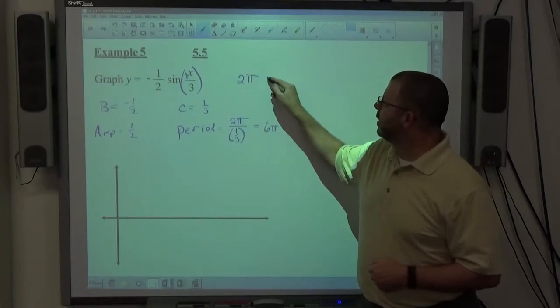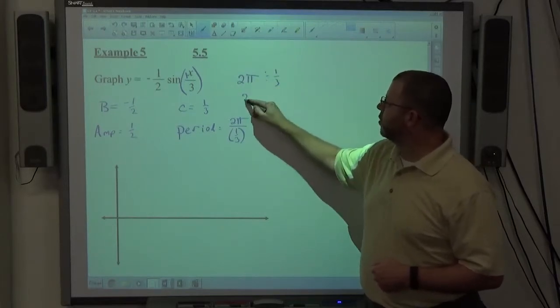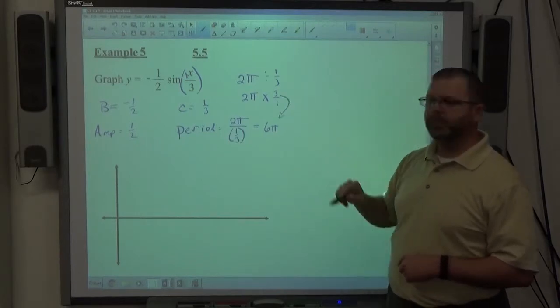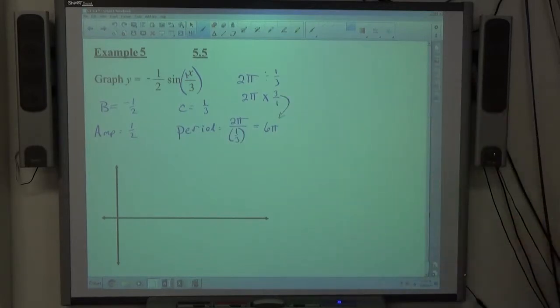So keep in mind, two pi divided by one third is the same as two pi times three over one, so it ends up being six pi. Be careful with that. A lot of times the number in front of X is a fraction. That creates a number bigger than two pi, not less.